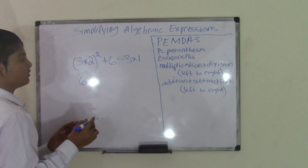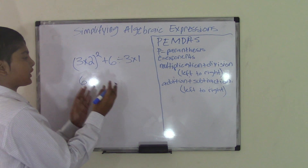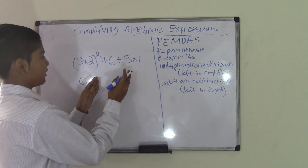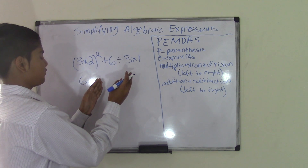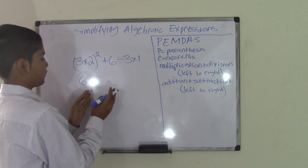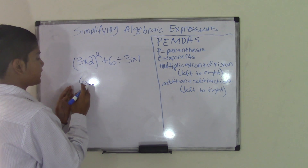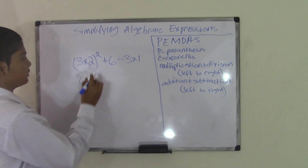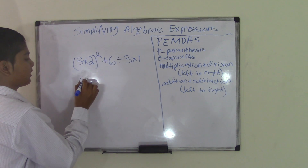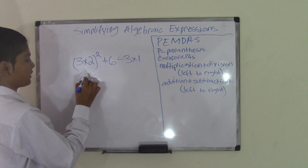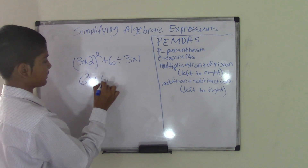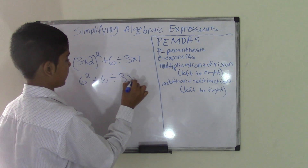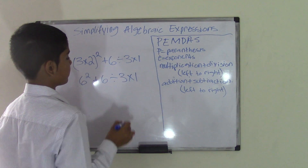We need to simply do the parentheses, which means we multiply 3 times 2, and we know that 3 times 2 is 6. Now I'm going to carefully put the rest of the information down, including the answer from 3 times 2. We put the exponent on top and then plus 6 divided by 3 times 1.